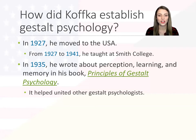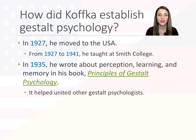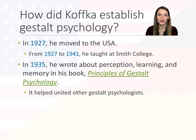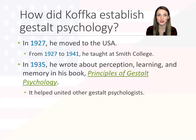In 1935, he wrote about Gestalt psychology in one of his most famous books, Principles of Gestalt Psychology. This book helped unite Gestalt psychologists — it could be thought of as the guidebook for all Gestalt psychologists, including everything discussed in this lecture and more. With Koffka's biography, we can see that Gestalt psychology made its way to the United States in the 1920s and became more popular in the 1930s before it eventually got replaced by behaviorism.